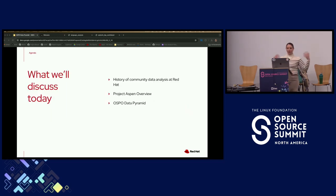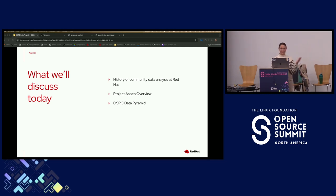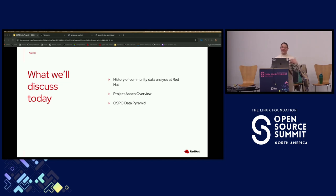So, what we are going to discuss today: first, we're going to go through the history of community data analysis at Red Hat — it's actually a lot richer history than I even knew before preparing for this session — and then we're going to go into an overview of what Project Aspen is, and that will go directly into talking about the OSPO data pyramid and what that statement even means.